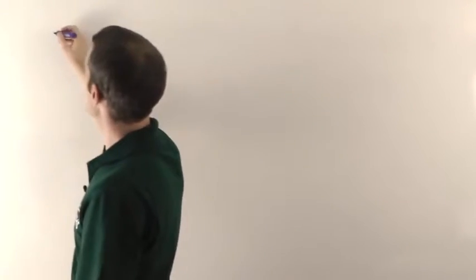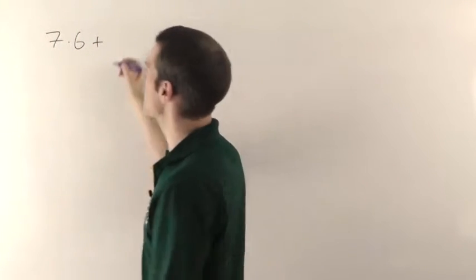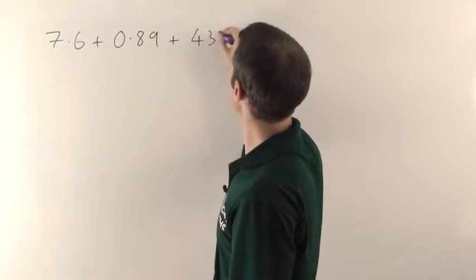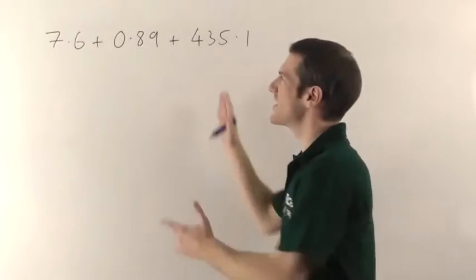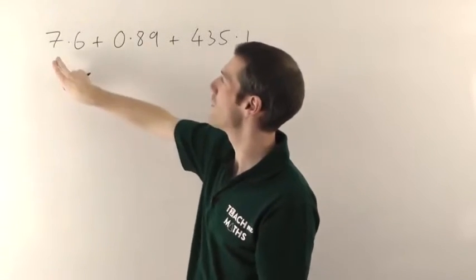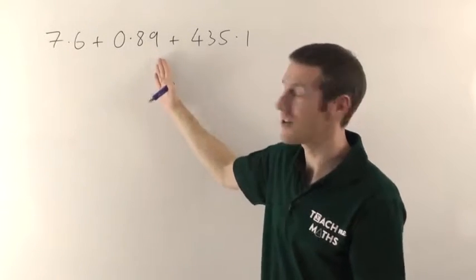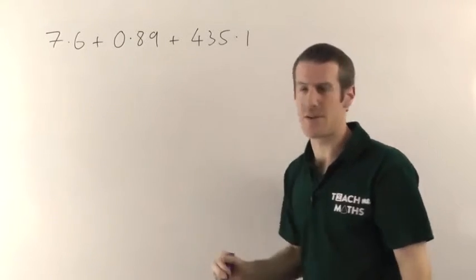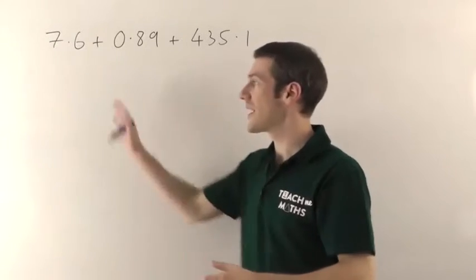It's really easy, so I'll just launch right in. I'm going to take a mix of numbers here: 7.6, 0.89, and then a big number, 435.1, something like that. Math teachers do like to give you a mixture of these things on math tests, and sometimes in real life you encounter this kind of thing as well. The main thing with this is you've got to line up all the columns properly. You must lay it out vertically.